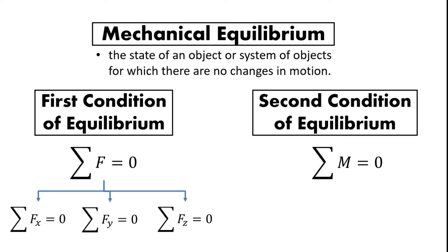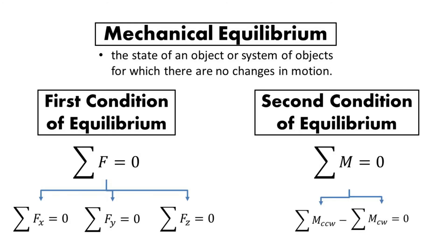For the second condition of equilibrium, we talk about moments acting counterclockwise and forces acting clockwise. Those are the directions considered for the first and second conditions of equilibrium. But for now, we will focus only on the first condition of equilibrium.